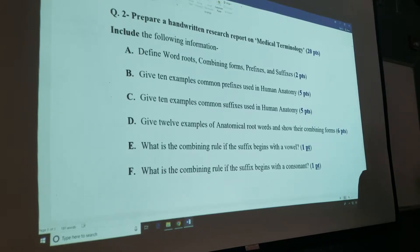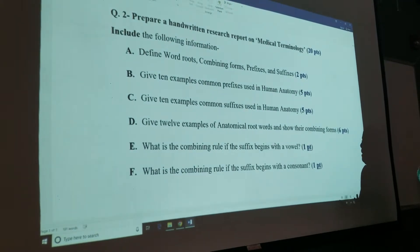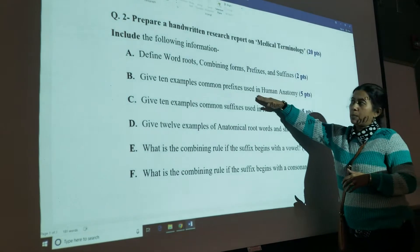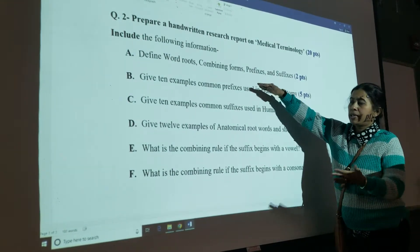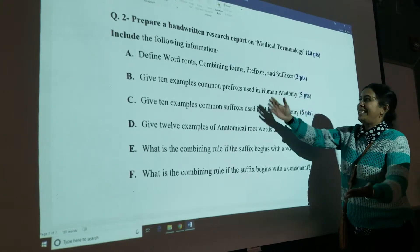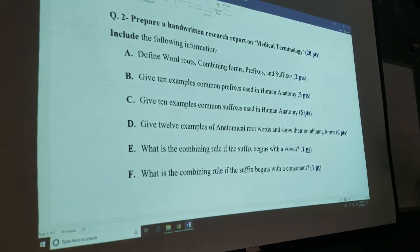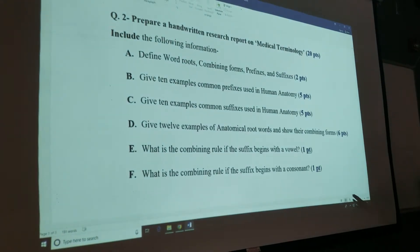Also keep one thing in mind. Try to look at at least two to three different sources. If you just use the same source and it gives you common prefixes, you might end up with 10 prefixes all starting with the letter A or B or C. You want to have a good mixture of prefixes with different alphabets.